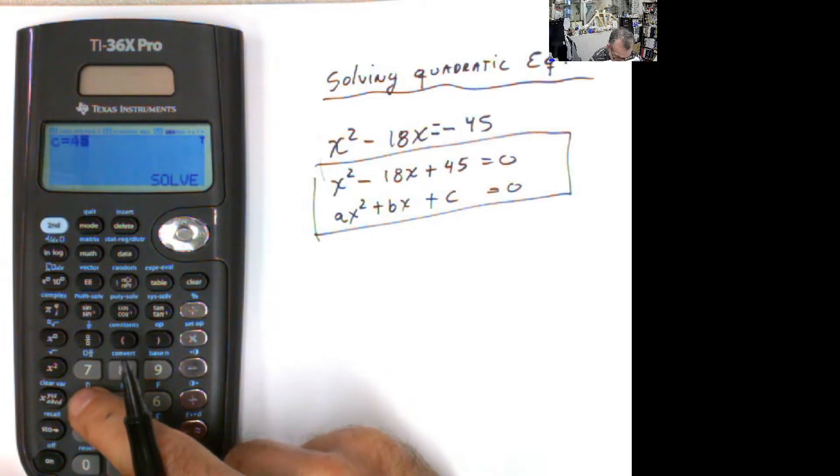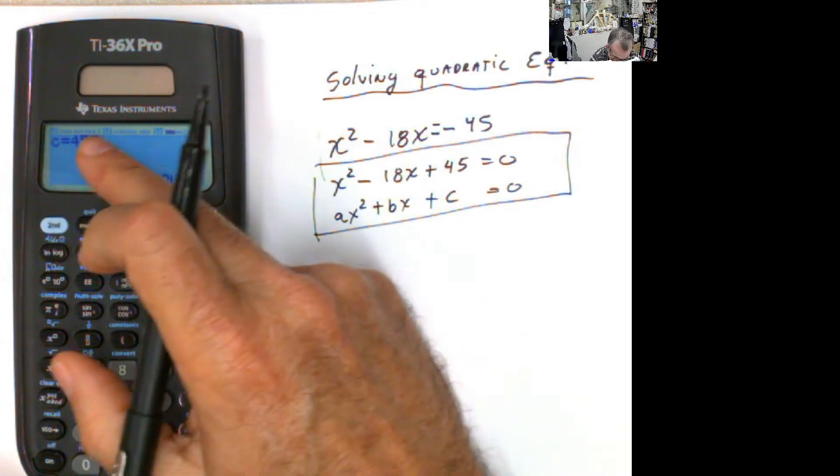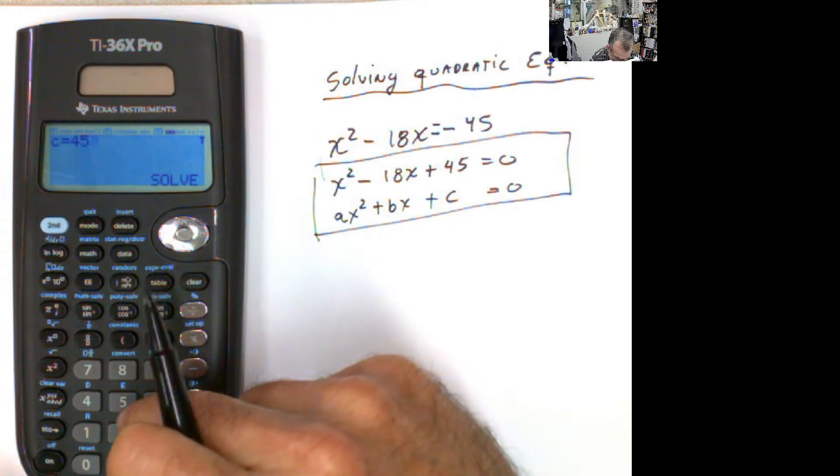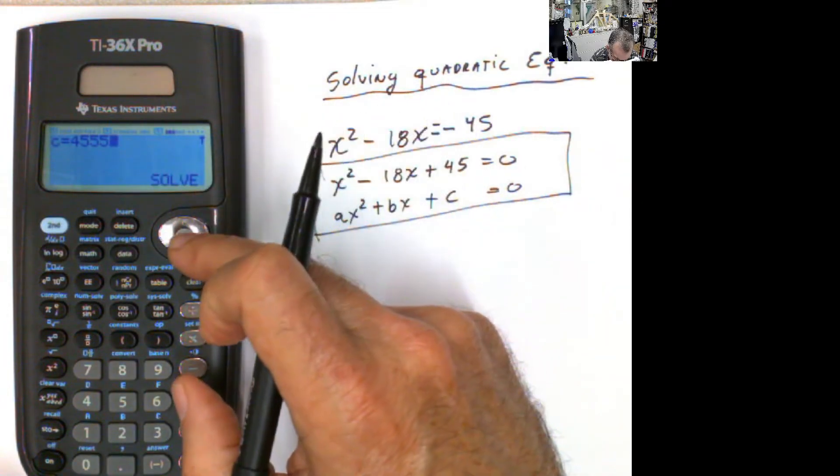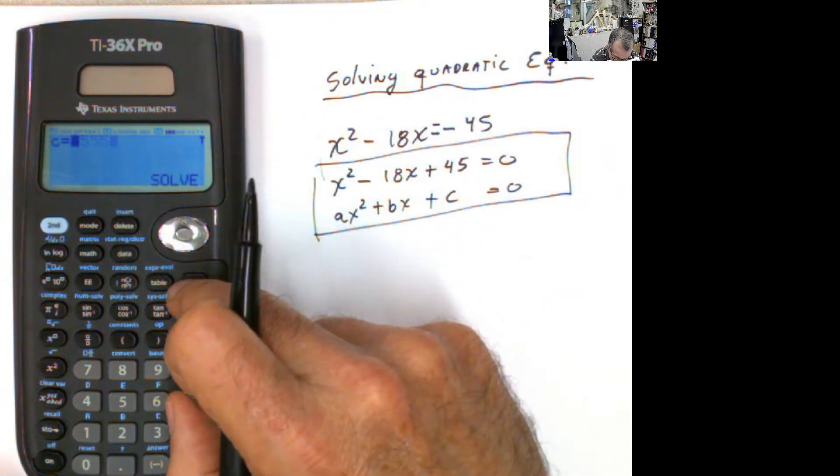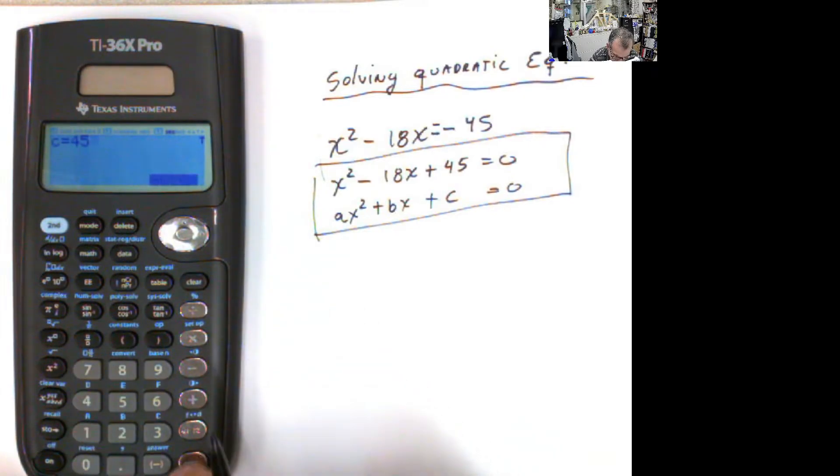And positive 45. It was some number there, but let's say you have a number because previously you might have a number there. You just hit here, clear, and then you put your correct number, 45.